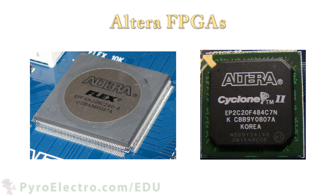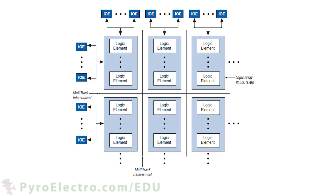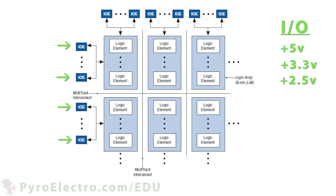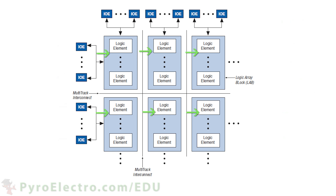FPGAs sometimes have over a thousand pin connections. Inside of a CPLD, the pins connect to input-output elements that define whether the pin is an input or an output, as well as what type of logic level should be used, like plus 5V, plus 3.3V, plus 2.5V logic, or LVDS pairs. Further internally, there are blocks of logic elements which are all interconnected.